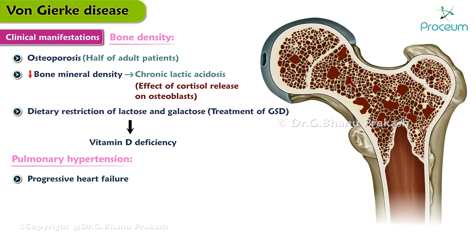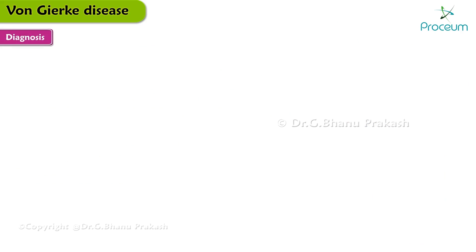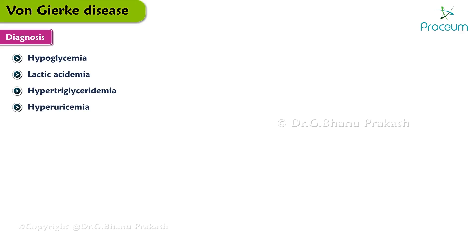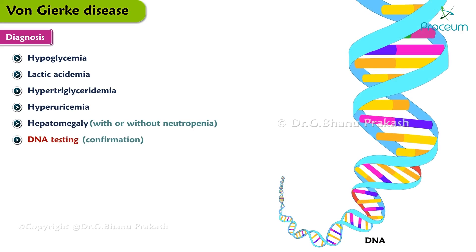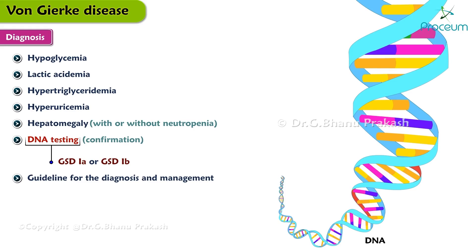Now let's talk about the diagnosis of GSD-1. GSD-1 should be suspected in patients with hypoglycemia, lactic acidemia, hypertriglyceridemia, hyperuricemia, and hepatomegaly with or without neutropenia. DNA testing is necessary to confirm the diagnosis of GSD-1A or 1B. A guideline for the diagnosis and management of GSD-1 is available from the American College of Medical Genetics and Genomics.